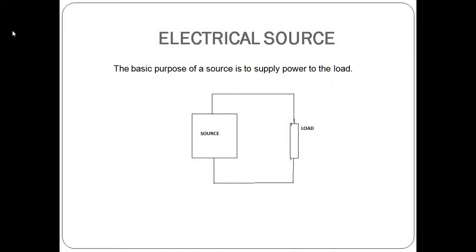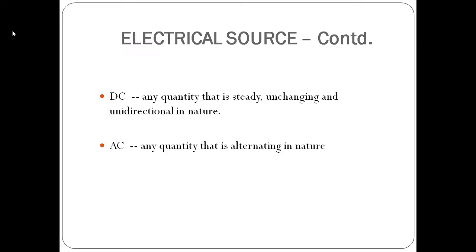The basic purpose of a source is to supply power to the load. Electrical sources are of two types: DC and AC. DC does not change with respect to time and is unidirectional in nature.